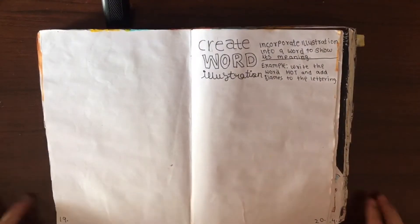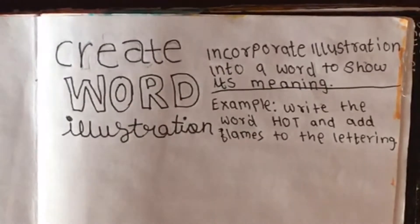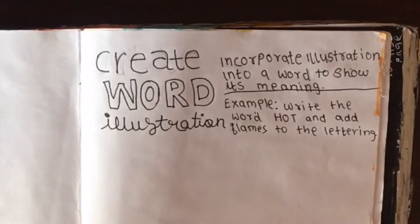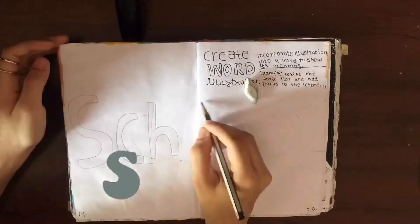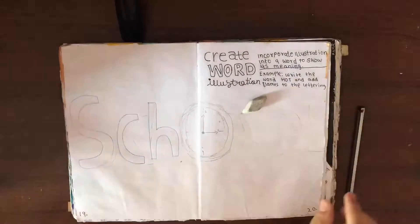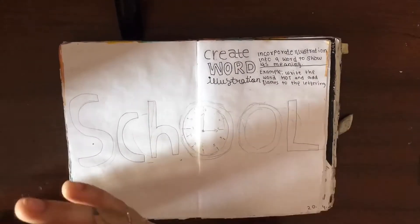The next page I decided to do for this episode was create word illustration: incorporate an illustration into a word to show its meaning. So the word I chose was school because it was just the first word that came into my mind when I was drawing on this page, so I just went for it.